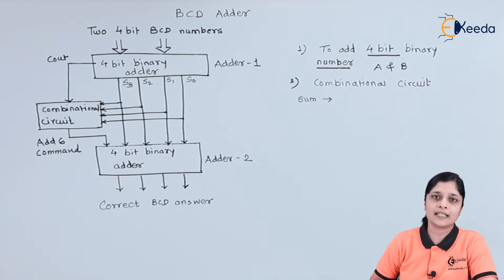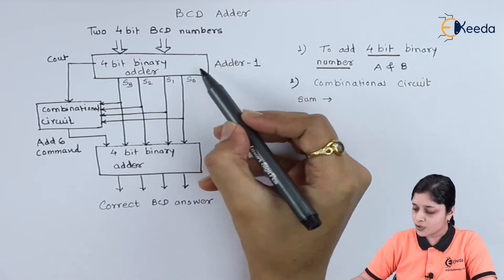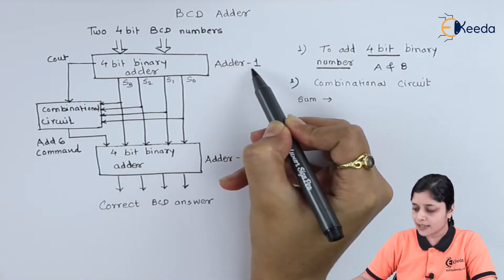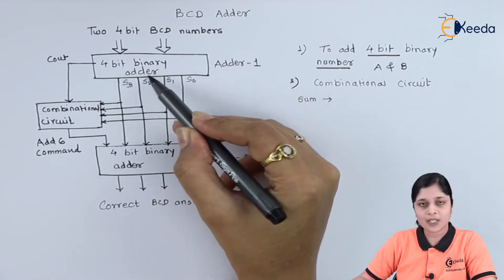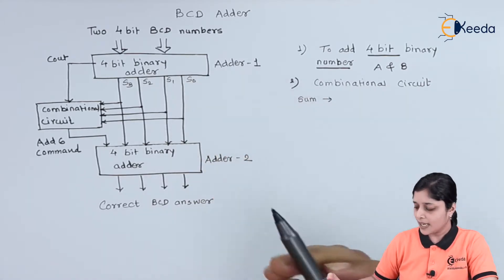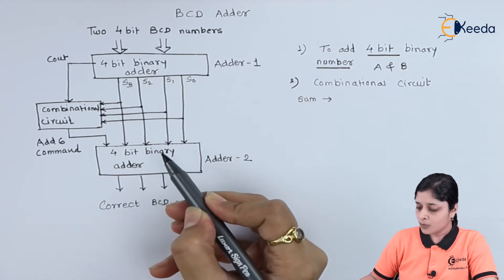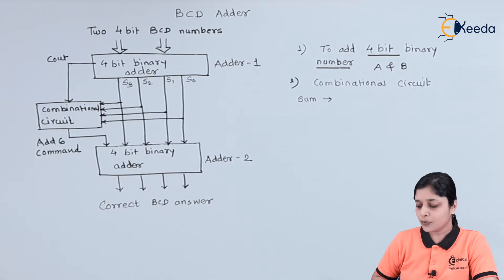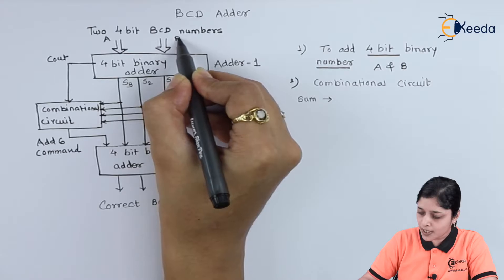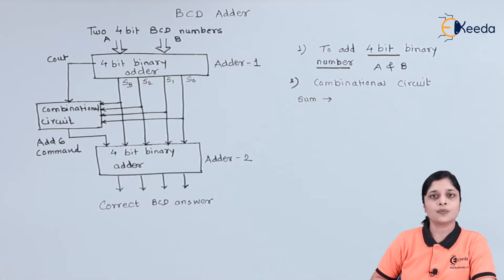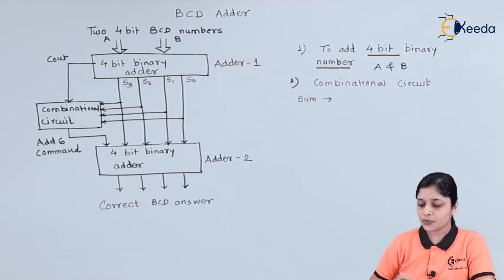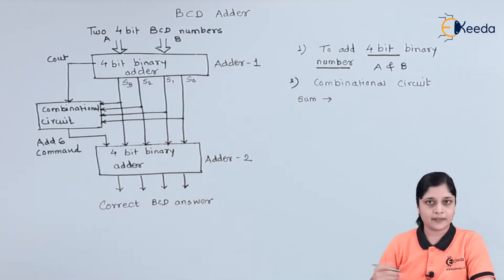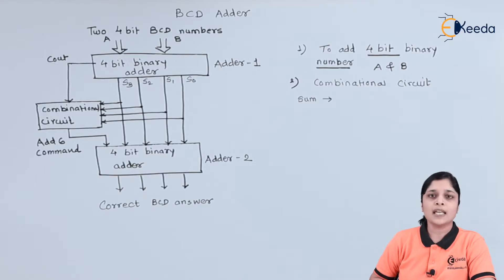To get the final answer using the BCD adders, this is your first adder — Adder One — which takes a four-bit binary number A. And here is Adder Two for adding four-bit binary numbers. So two numbers, A and B, each of four bits, are given to the first adder.